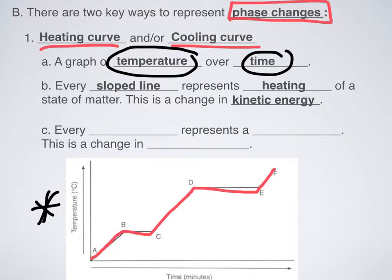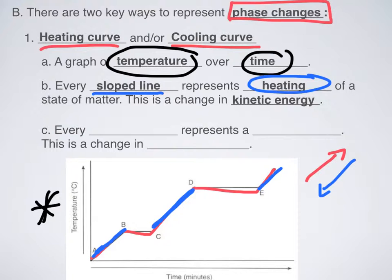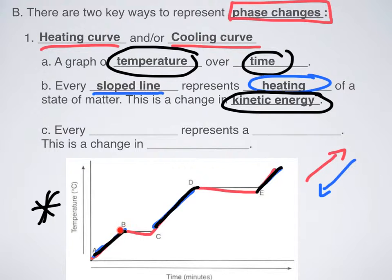What do these things mean? The sloped lines represent heating something up — or, going the opposite direction, cooling something down. That represents a change in kinetic energy. Every time I see a sloped line, I am changing the amount of kinetic energy that this system has. In kinetic changes, things move faster or slower. As I increase the temperature from the bottom, things move faster and faster until it flatlines at point B, then from C to D things get faster again, then it flatlines, and so on. Anytime I see a sloped line, that's a change in kinetic energy.